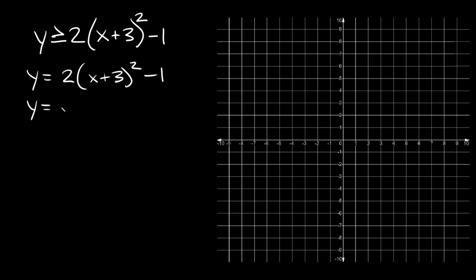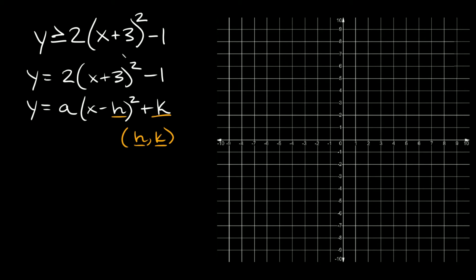Vertex form is y equals a times (x minus h) squared plus k, where h and k are the x and y coordinates of your vertex. The only difference is for your x-coordinate, you always take the opposite sign. So since here we have a positive 3, the x-coordinate would be at negative 3. The y-coordinate stays the same, so it's negative 1. So our vertex is at negative 3 comma negative 1.